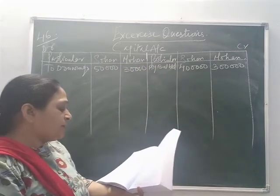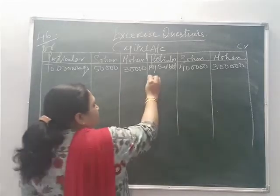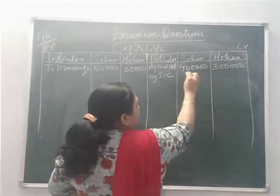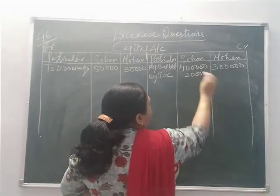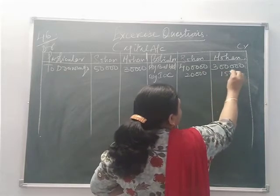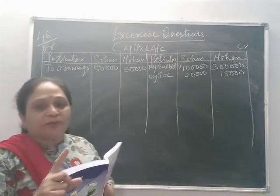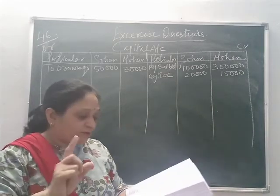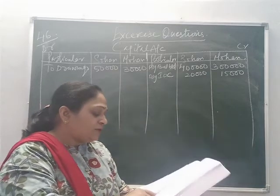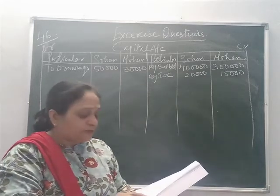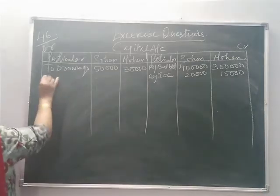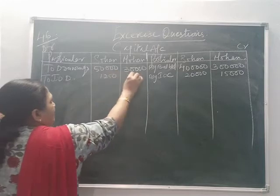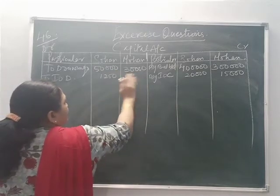Interest on capital at 5% per annum: 5% of Sohan's capital = 20,000, and 5% of Mohan's capital = 15,000. Interest on capital is always charged on the opening capital of the partner, not on the closing capital. Then interest on drawings — figures are directly provided: 1,250 for Sohan and 750 for Mohan, on the debit side.